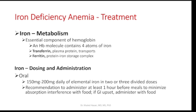Iron is an essential component of hemoglobin. There are two important endogenous proteins in the blood: transferrin, a plasma protein responsible for transport of iron; and ferritin, responsible for storage of iron — it is a protein-iron storage complex. The question to remember: which protein is responsible for transport? Transferrin. Which is responsible for storage? Ferritin.